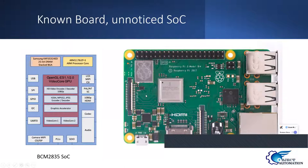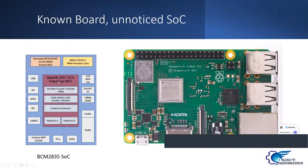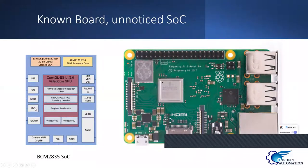The Raspberry Pi uses a Broadcom processor — specifically the BCM2835 SoC. This SoC has GPU support for OpenGL, a 1080p video encoder/decoder, audio support, HDMI support, SPI (Serial Peripheral Interface), I2C (Inter-IC Connect), and UART communication — all inside that single SoC.